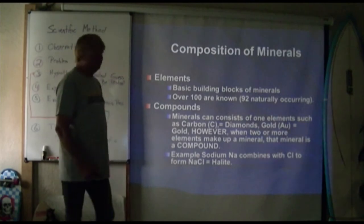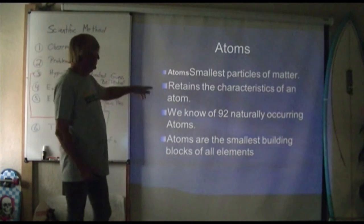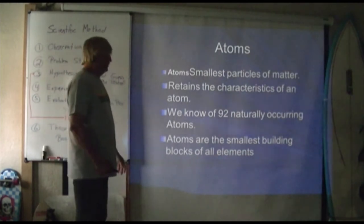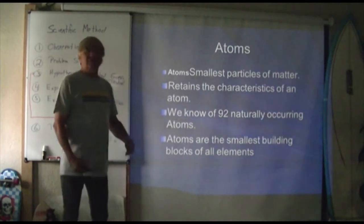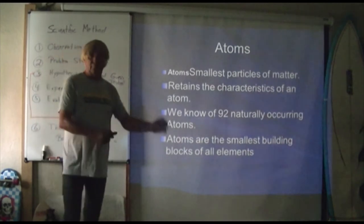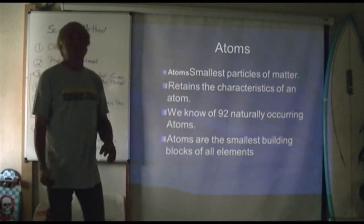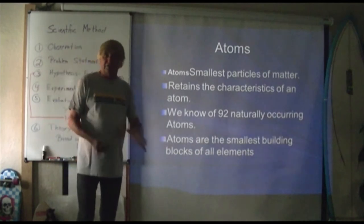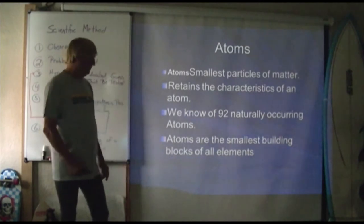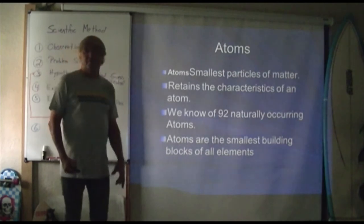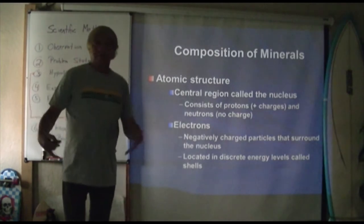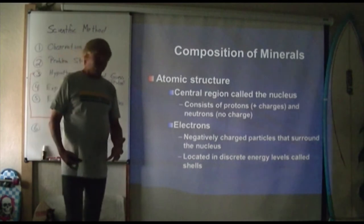An atom is the smallest particle of matter — it retains the characteristics of an element. There are 92 naturally known elements and 92 known atoms. You can't convert lead to gold because lead contains lead atoms and gold contains gold atoms. People have talked about messing with electron configuration to convert lead to gold, but it's never going to happen because you would actually have to change the atoms themselves. Atoms are the building blocks of all the elements, and there is an atomic structure that brings these different elements together to form compounds.